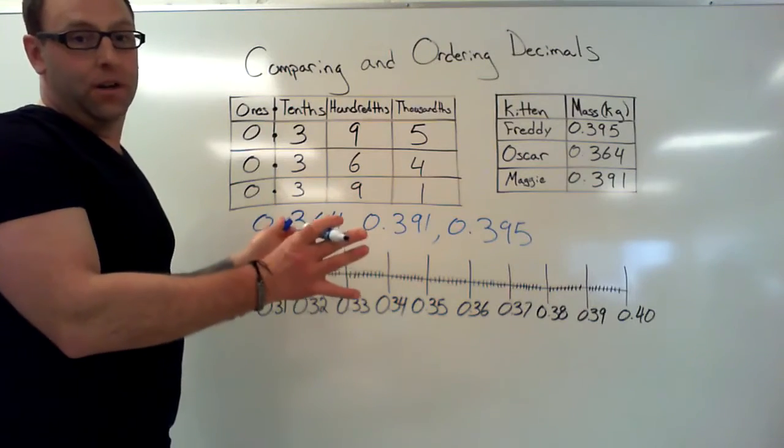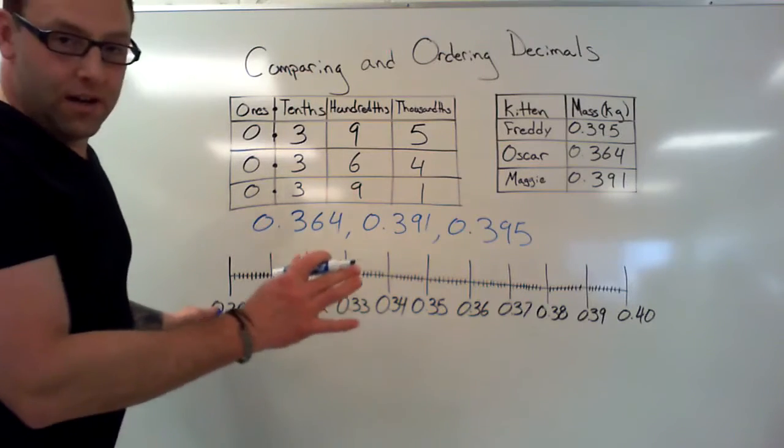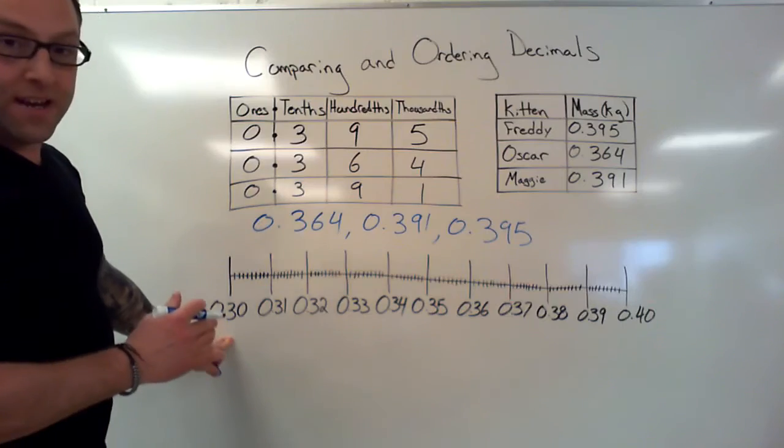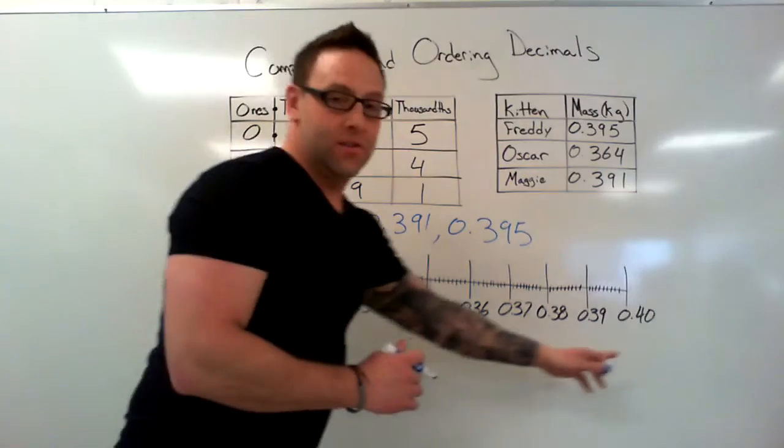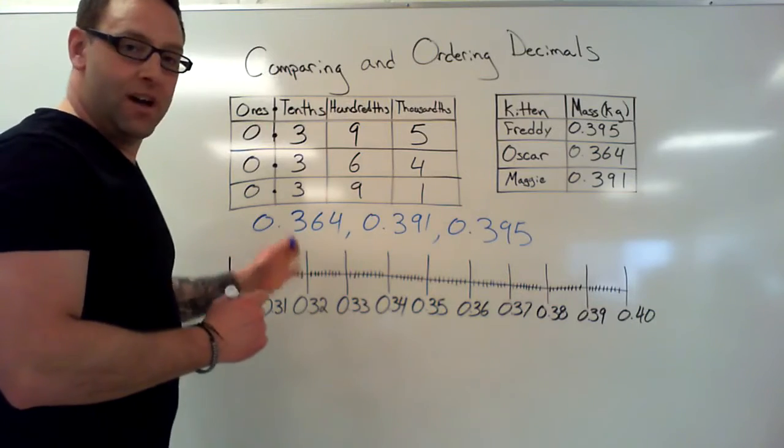Could have done a better job with that, I apologize. But we're looking at a number line that is divided between zero point three zero and zero point four zero. All these little lines in here represent more of these digits.